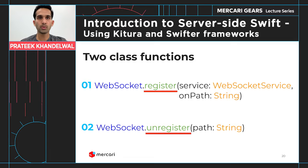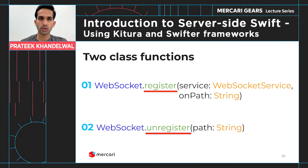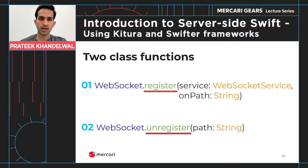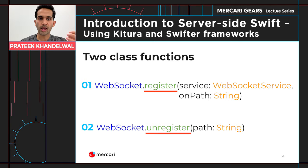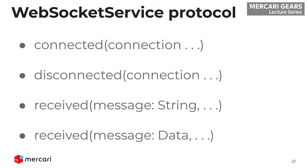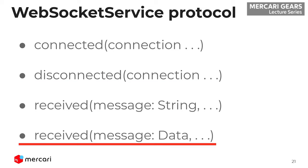So there are two important functions: register and unregister. It's like the router object in the case of REST API connections — here we have WebSocket class functions register and unregister. We have to implement a service that implements the WebSocket service protocol. There are four functions: connected, disconnected, received message in string format, and received message in data format.